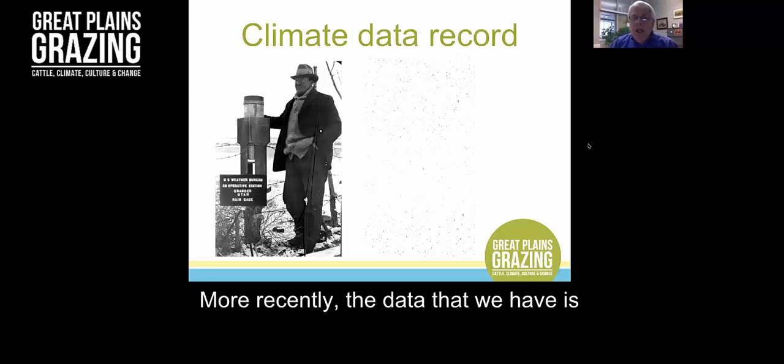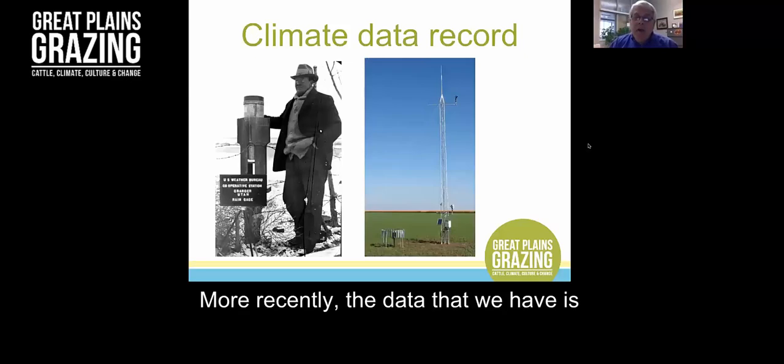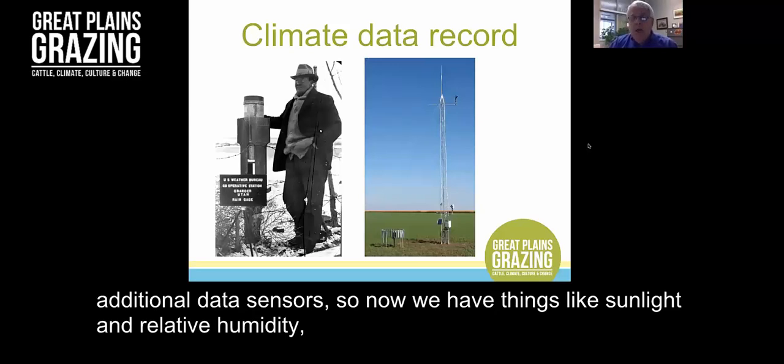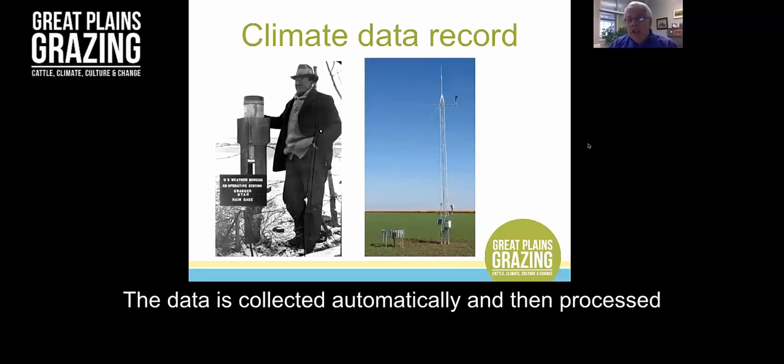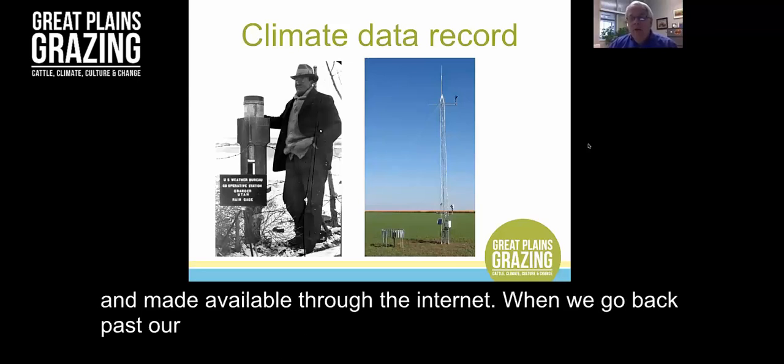More recently, we have additional data sensors. Now we have things like sunlight, relative humidity, and dew points on automated weather networks. The data is collected automatically and then processed and made available through the internet.